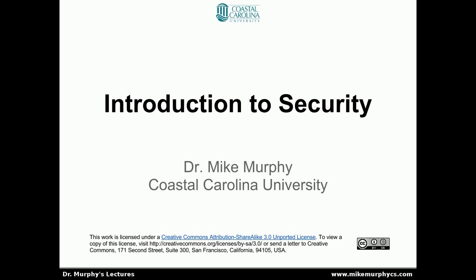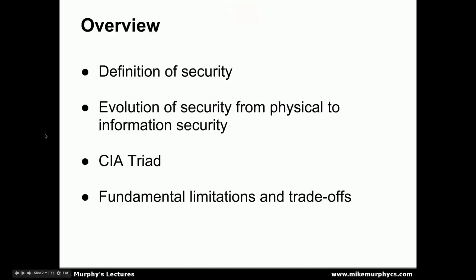In this lecture, I'm going to introduce basic security principles and begin discussing information systems security. I'll begin by defining what we mean by security, discuss how security from the physical world evolved into the information world, talk about the CIA triad, which establishes the principles of information security we use for evaluating systems, and then discuss some fundamental limitations and trade-offs between security and functionality and between the principles in the CIA triad.